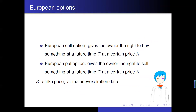We mainly introduced European options. There are two types of European options. The European call option gives the owner the right to buy something at a future time T at a certain price K. The European put option gives the owner the right to sell something at a future time T at a certain price K. Here K is called the strike price, while T is called the expiration date.